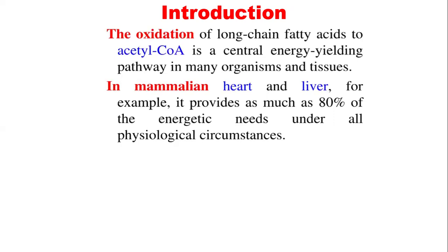For unicellular organisms such as protists, they obtain their fats by consuming organisms that are lower in the food chain, and some of them store energy as cytosolic lipid droplets. In higher plants, stored fats are mobilized from fats stored in seeds, and this actually occurs during germination.